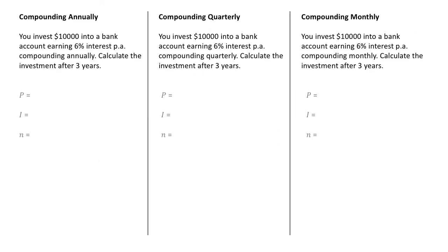To show how to use the formula and how different compounding periods impact on the calculation, there are three examples on the screen — each exactly the same except for the compounding period. In each example, we're investing $10,000 into a bank account earning 6% interest per annum for a period of three years. First, we'll look at how to use the formula if we're compounding annually.